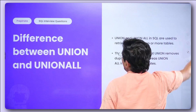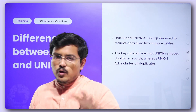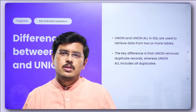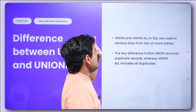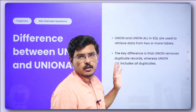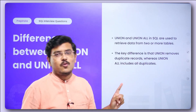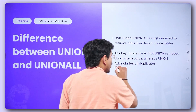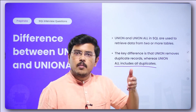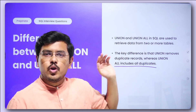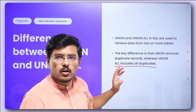Moving ahead, what's the difference between union and union all? They are used to retrieve data from two or more tables. The key difference is that union removes duplicate records, whereas union all doesn't remove duplicates — it includes all of them. For example, if you have two employees with the same name and data, union would not return the duplicate record, whereas union all will.